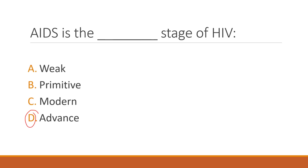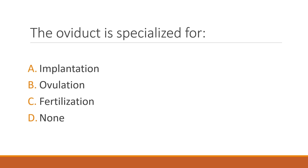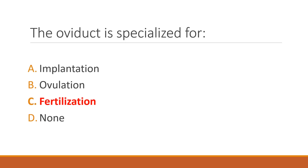The oviduct is specialized for what? Fertilization occurs in the oviduct, specifically in its proximal part. So the correct answer is option C: fertilization.